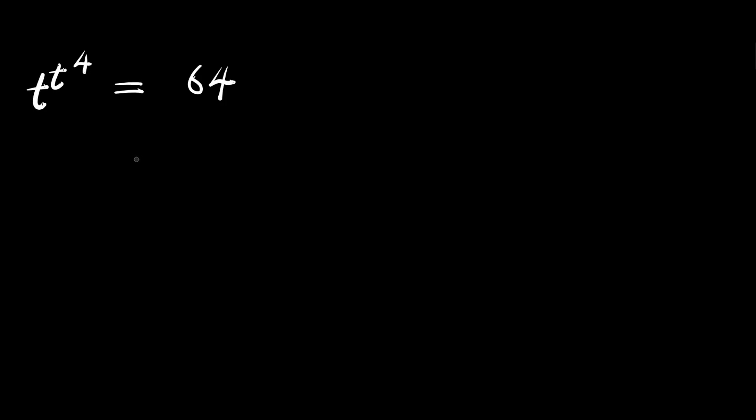Hello, how to solve this cascaded exponential problem? This is t to the power of t to the power of 4, and this equals 64.